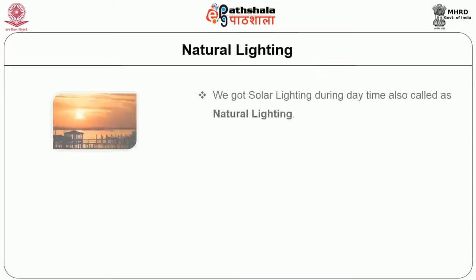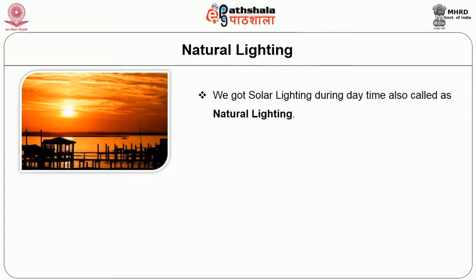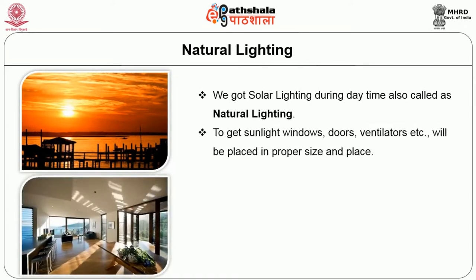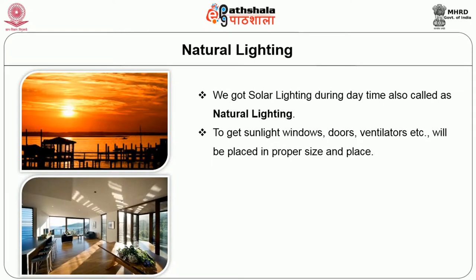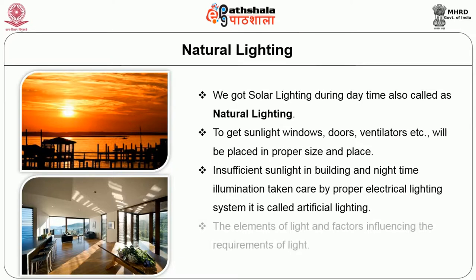Natural lighting: we get solar lighting during daytime, also called as natural lighting. To get sunlight through windows, doors, ventilators, etc., these will be placed in proper size and place. Insufficient sunlight in buildings and nighttime illumination is taken care of by a proper electrical lighting system, called artificial lighting. In this, we discuss about elements of light and factors influencing the requirements of light.